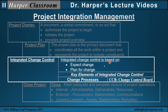Integrated change control is based on: expect change and plan for change. Change happens, and the integration part is to make sure that when you have a change in one part of the project, it doesn't cause a problem in another part. Key elements of integrated change control include: change processes — knowing when a change is needed, when a change is done, how a change is done — and the change control board, which is the decision-making body for changes.